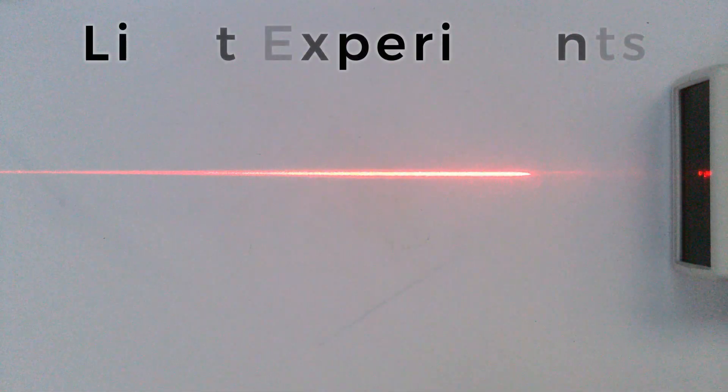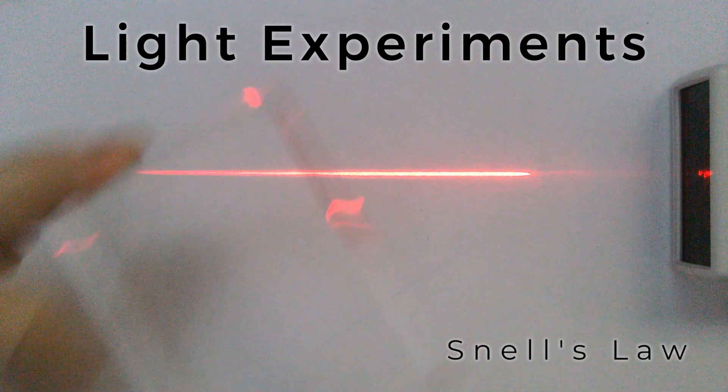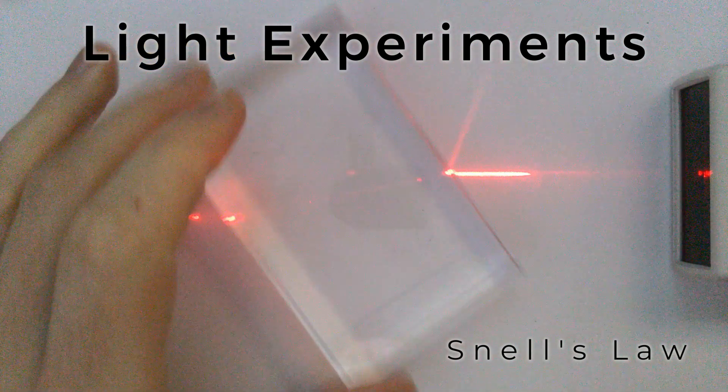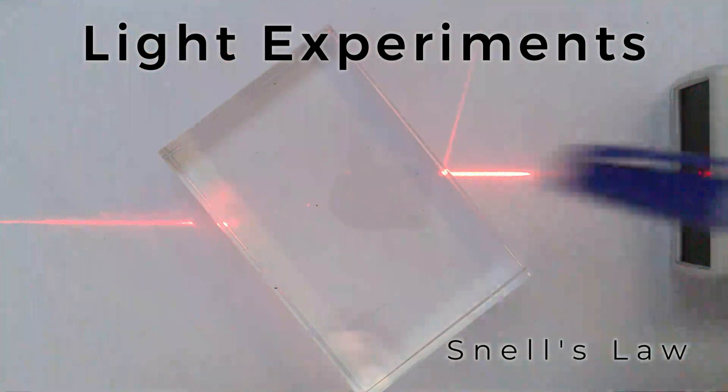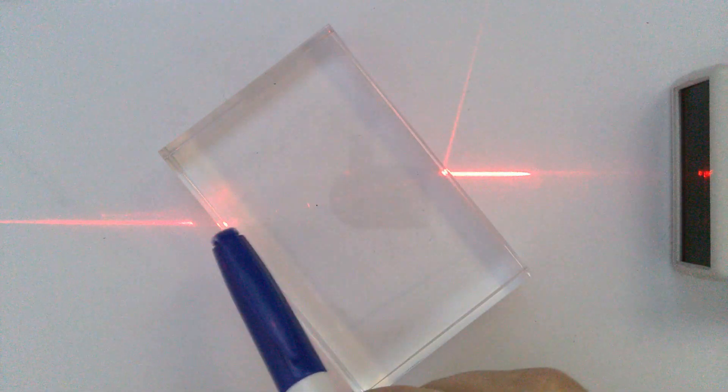Alright, so we're going to take a look at refraction of light. So when it hits a glass block or glass prism or a different medium, what happens to the light ray? So here we can see that the light ray comes in, hits the medium, and you can actually kind of see it very faintly in the glass here, and then it comes out the other side.